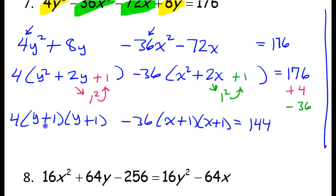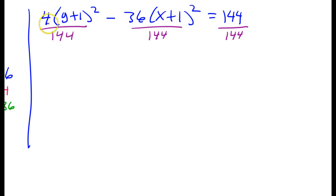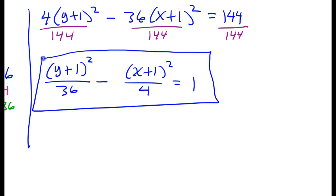For the standard form equation of a hyperbola, we always need equals 1 on the right-hand side, so we divide everything by 144. Now we need to reduce these fractions. How many times does 4 go into 144? How many times does 36 go into 144? It turns out 4 goes into 144 thirty-six times, so this becomes y plus 1 squared over 36. And 36 goes into 144 four times, so this becomes x plus 1 squared over 4, equals 1. That's the standard form equation of the hyperbola.